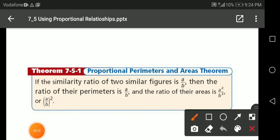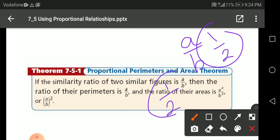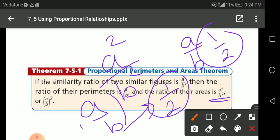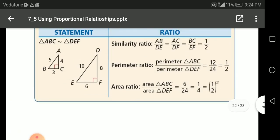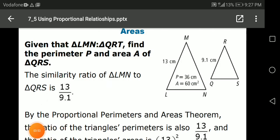So I conclude that here, if the similarity ratio of two similar figures is a over b, for example 1 over 2, then the perimeter will be the same, a over b, 1 over 2. And according to the area, it will be a to the power 2 over b to the power 2, or a over b all squared. The same as this one.